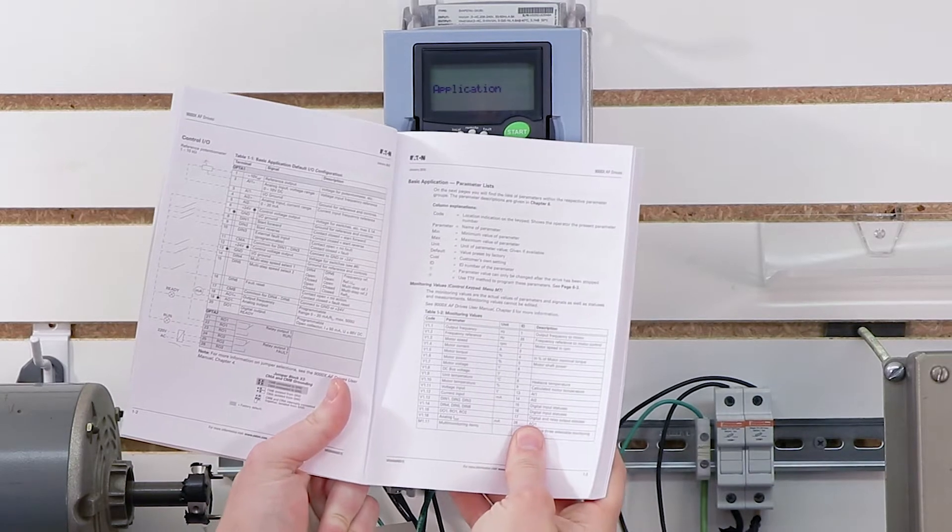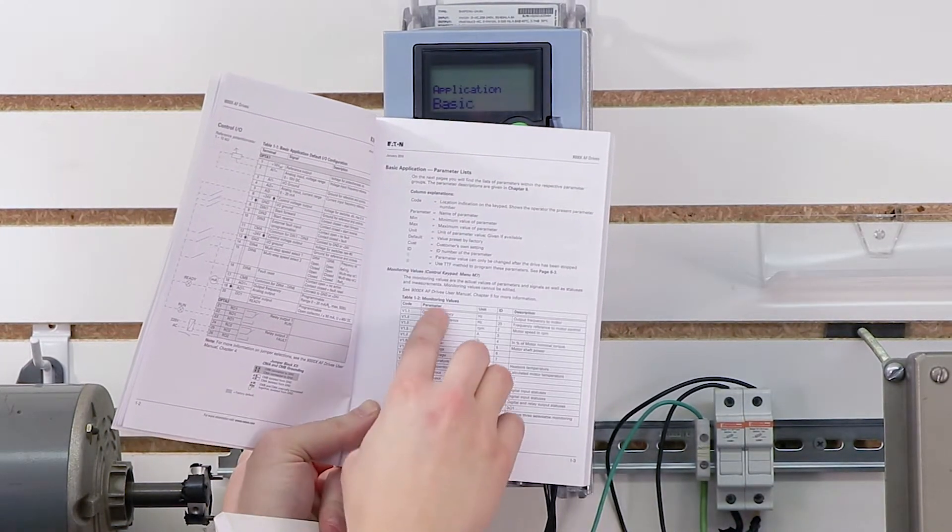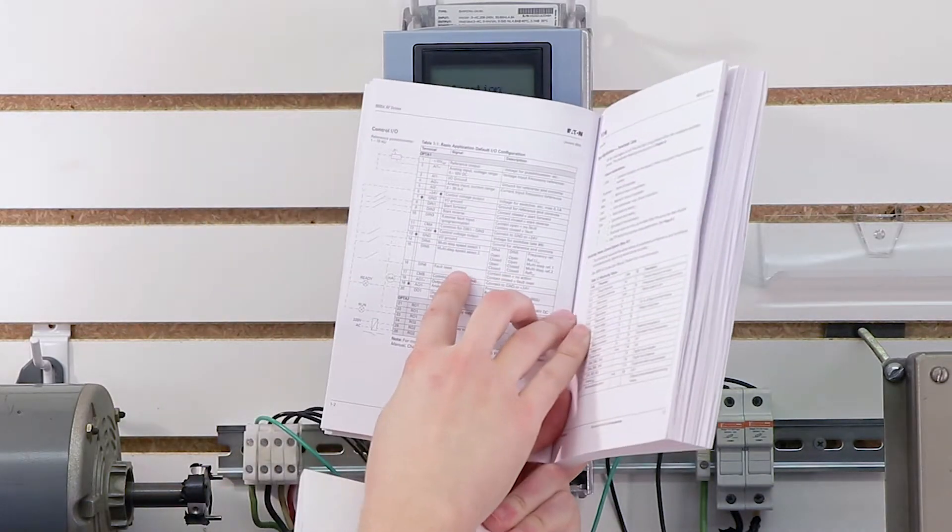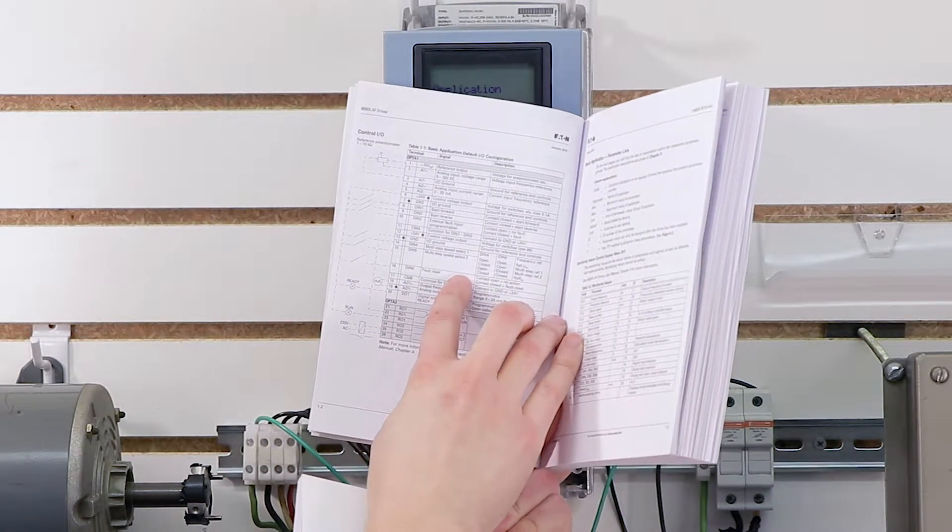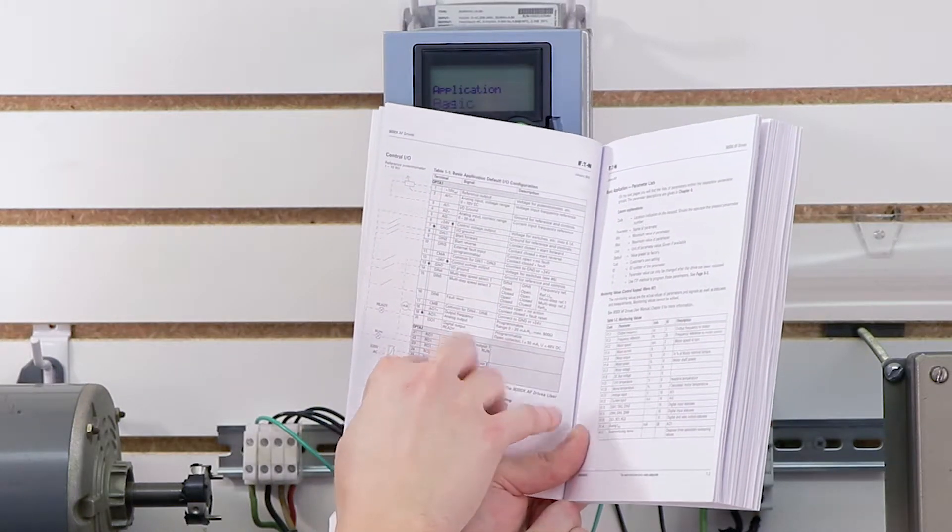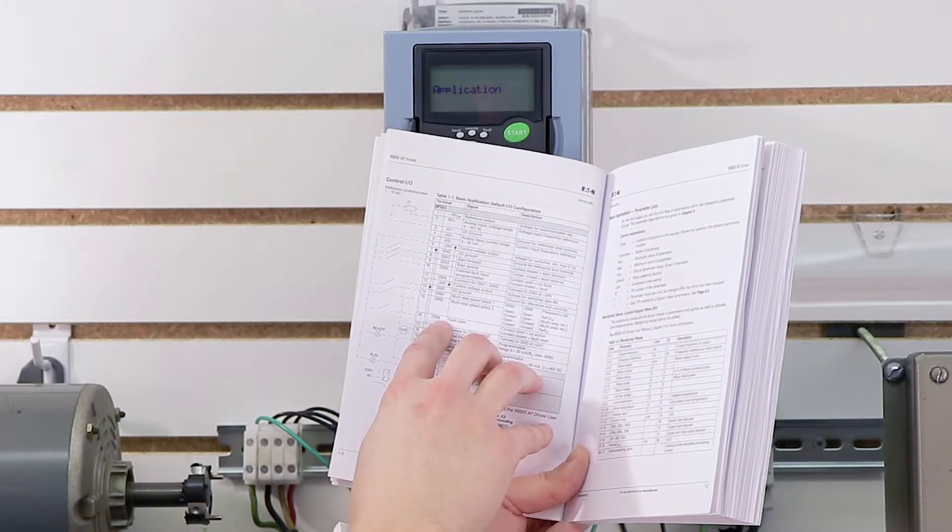The essential basic application is as follows. Essentially, it's got this parameter list with these default parameters that will be changed. On the left hand side of that page in your application manual, you're going to see all the wiring associated with that macro. Now we're not wiring anything just yet, but later on we're going to reference this when we actually do our wiring.